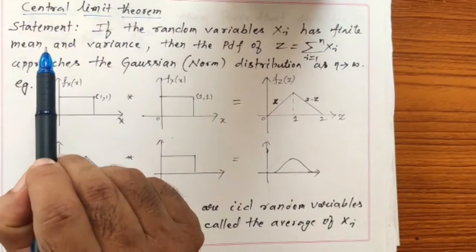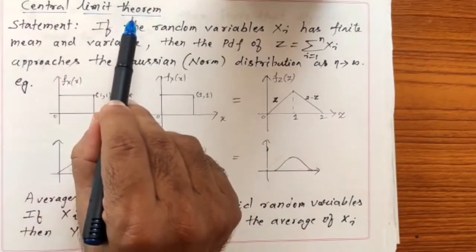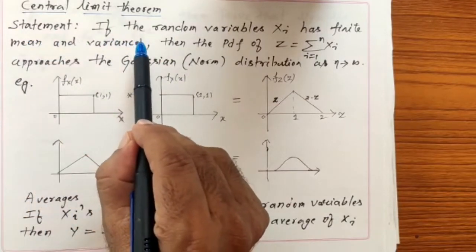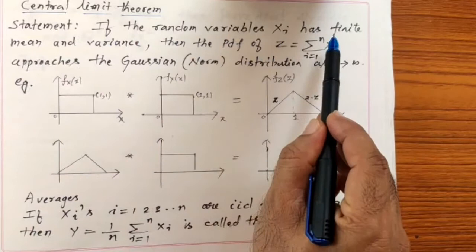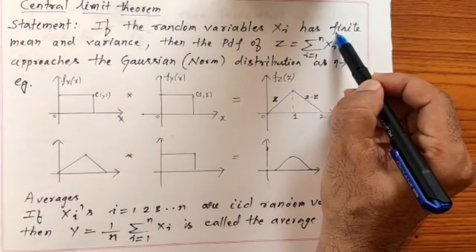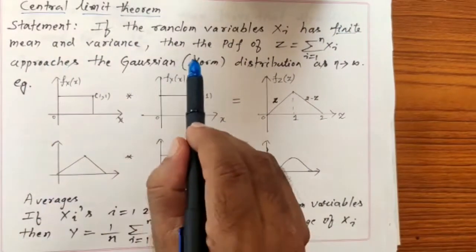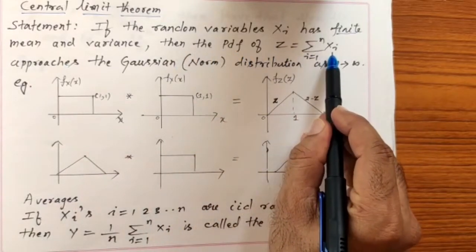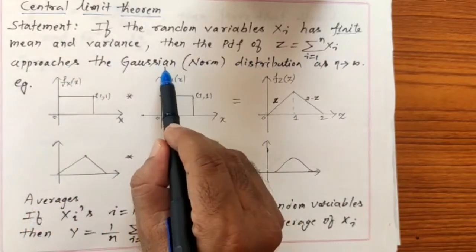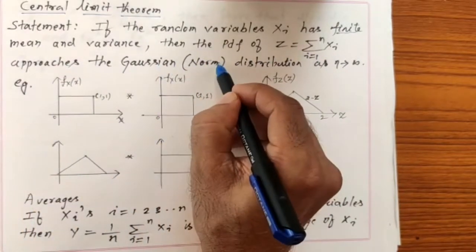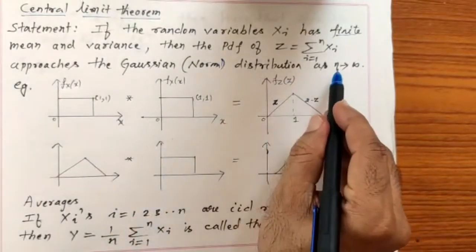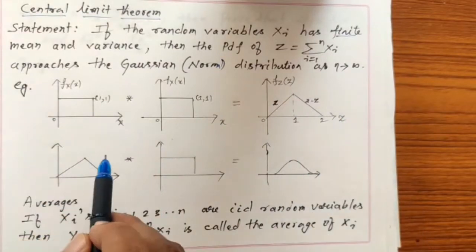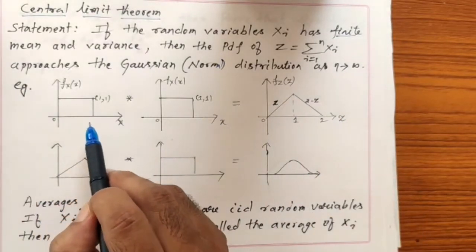Now we will see what the Central Limit Theorem is. The Central Limit Theorem, according to our syllabus, states that if the random variables X1, X2, ..., Xn have finite mean and finite variance, then the probability density function of Z — which is the sum of those random variables — approaches the Gaussian, that is, normal distribution as n converges to infinity.